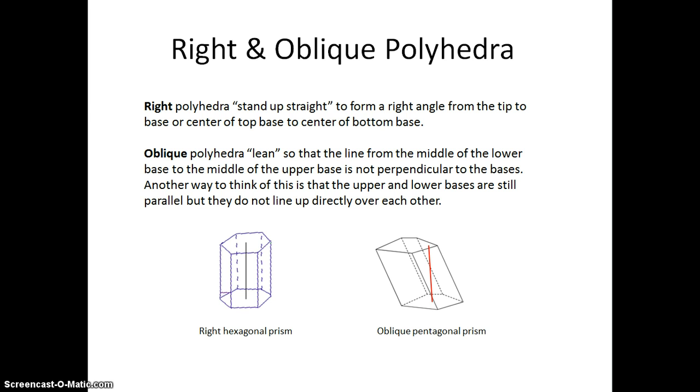Oblique polyhedra lean so that our perpendicular line no longer goes from the middle of the bottom to the middle of the top. Another way to think about this is the upper and lower bases are still parallel to each other, but they don't line up directly over each other.